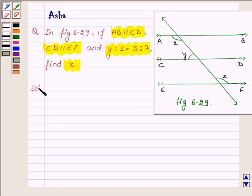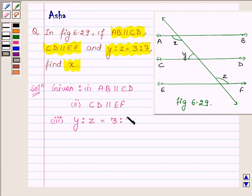Let us begin with the solution. First, let us write what we are given: AB is parallel to CD, CD is parallel to EF, and Y:Z = 3:7. We have to find the value of X.